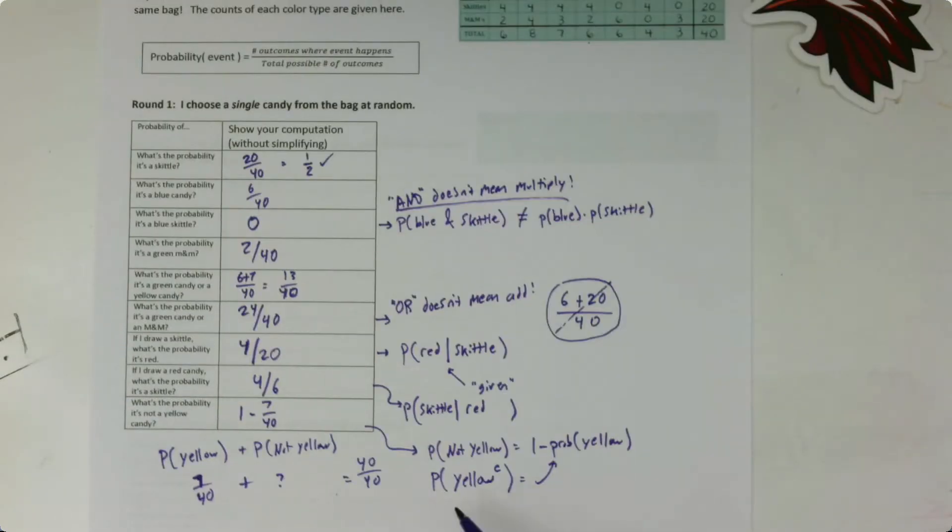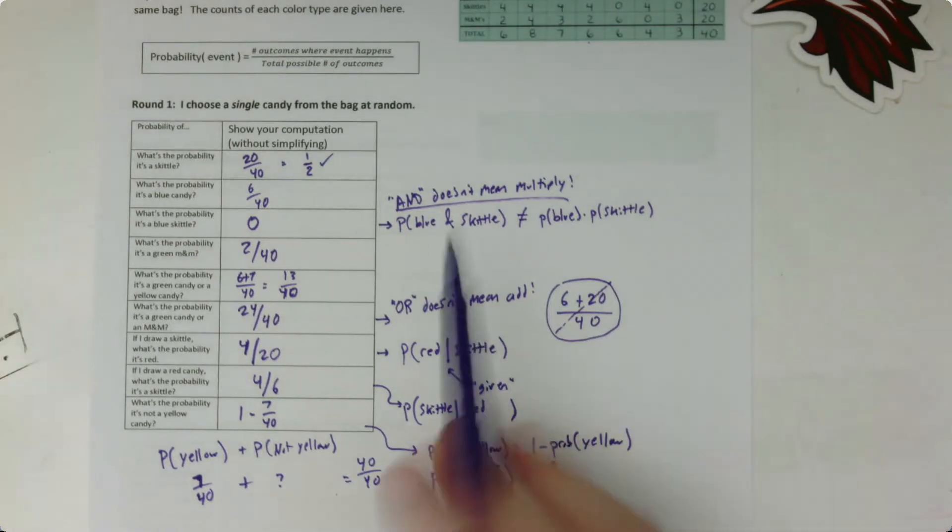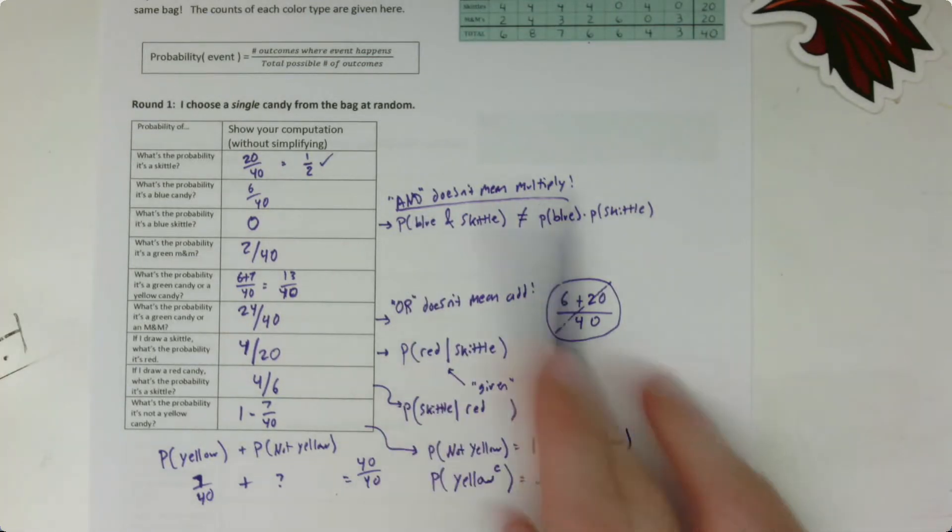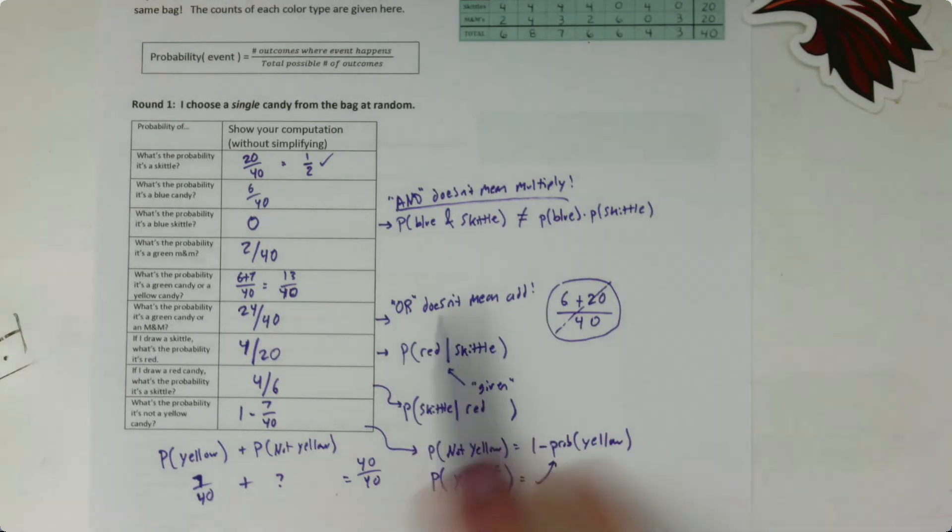Okay, so the things that might be new here. Unlearn that AND means multiply because it doesn't always, OR doesn't always mean add. Practice using this notation where we're finding the probability of something given something else. And then this idea of the complement of an event being 1 minus the probability of that event. All right, join us for the back page.